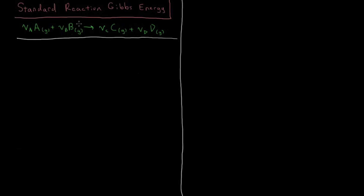Our standard Gibbs energy of reaction, delta RG naught, as we've defined previously, is equal to minus RT times the natural log of the equilibrium constant K. Our equilibrium constant can be expressed in terms of different quantities — pressure or concentration — but that doesn't really help us, because unless we already know the equilibrium constant, that doesn't help us know our Gibbs energy of reaction, and vice versa. So we want an alternative way to get our Gibbs energy of reaction, so we know what our equilibrium constant is and how far our reaction will extend towards products or reactants.